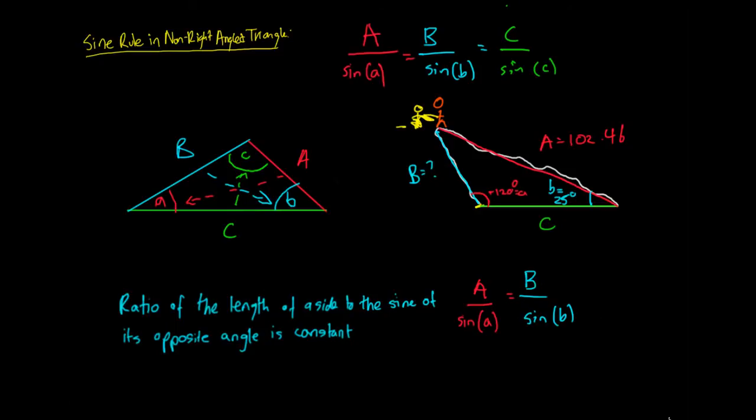So what I can do now is I can say, I know what my A is. My length of side A is 102.46. And then I know my sine of A. So my sine of A is going to be the sine of 120 degrees. So the length divided by the sine of the opposite angle is going to be equal to side B, which I don't know what that is. That's what I'm concerned about. I want to know how high Simba is above the ground, divided by my sine of B, which is 25 degrees.